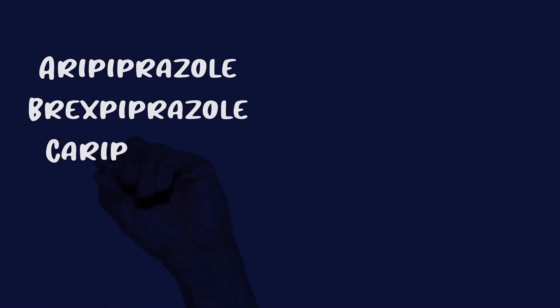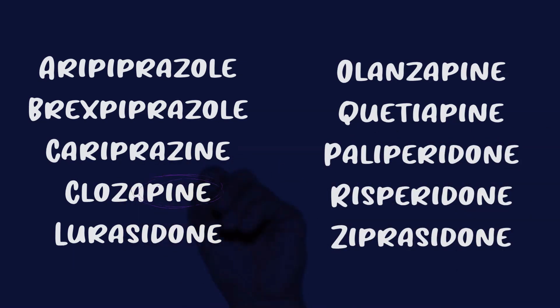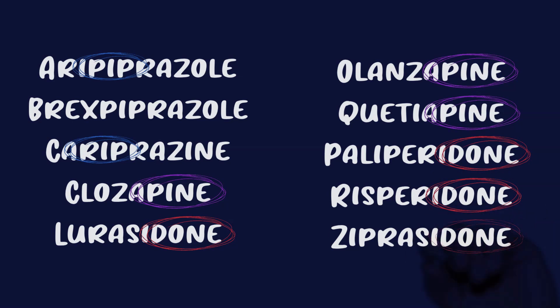To get started, I'm just going to list out the second generation antipsychotics in alphabetical order. And next I'm going to circle the words 'pine,' 'done,' and 'pip and rip.' I'm taking this right from Stahl's Essential Pharmacology, where he endearingly coins them 'the pines, the dones, two pips and a rip.' Once you realize the pines share similarities, the dones share similarities, and the pips and rips are similar, it's much easier to keep the differences between the antipsychotics organized. Your brain should automatically view these as subclasses, not just silly random suffixes.